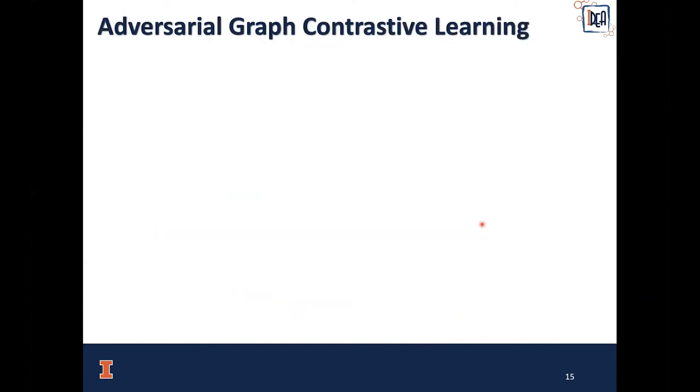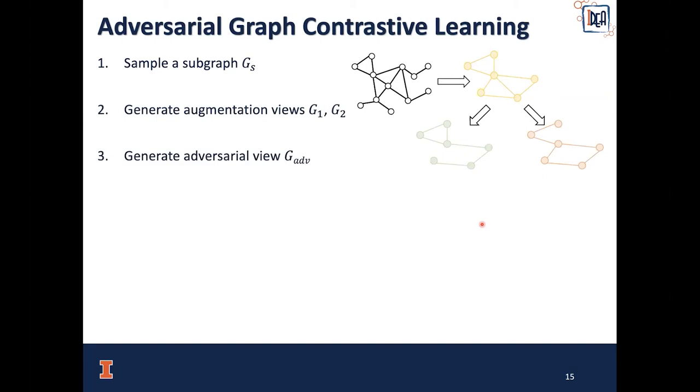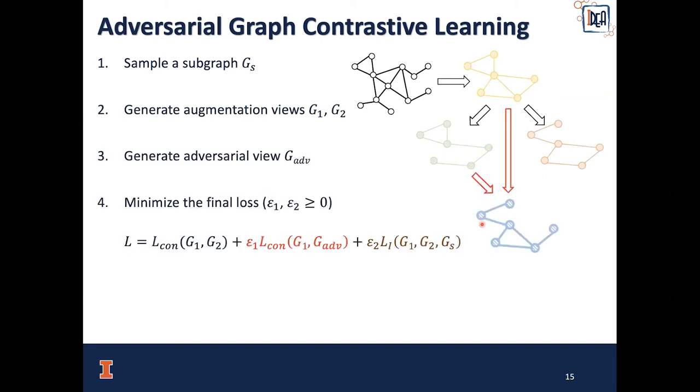Finally, I will sketch each step of our adversarial graph contrastive learning method. In the first step, we sample a subgraph G_s. Then we generate augmentation views G_1 and G_2, and generate adversarial view G_adversary. We minimize the final loss, which has three parts: the contrastive loss, adversarial contrastive loss, and information regularization. Epsilon_1 and epsilon_2 control the portion of the last two parts. Finally, we update epsilon_1 to gamma times epsilon_1 every T epochs, to allow for gradually increasing portion of the adversarial contrastive loss.